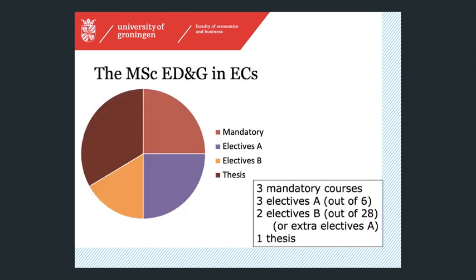The master program in brief: it's a one-year master, which means that the thesis — which is 20 ECs — represents one-third of the program. A quarter of the program consists of mandatory courses, which means there's ample opportunity to tailor your program to your desire. There are an additional five courses that you're free to choose from an extensive list.